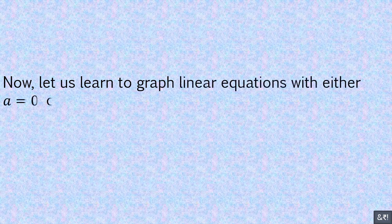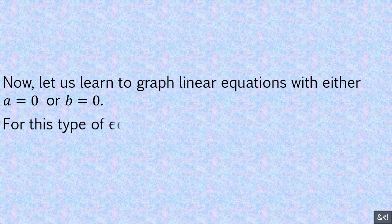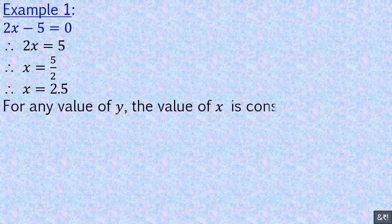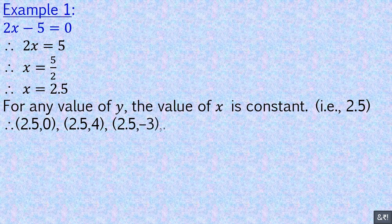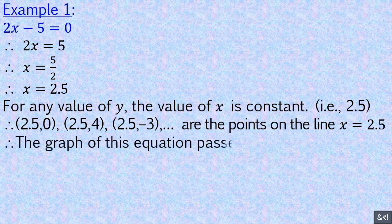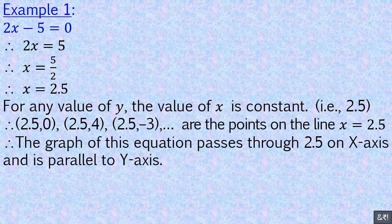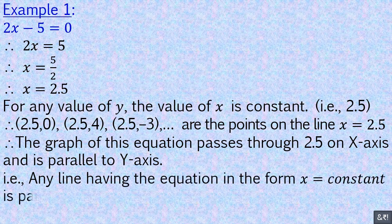Now let us learn to graph linear equations with either a equals 0 or b equals 0. For this type of equation, always simplify it to the form x equals constant or y equals constant. Example 1: 2x minus 5 equals 0, therefore 2x equals 5, therefore x equals 5/2, that is x equals 2.5. For any value of y, the value of x is constant at 2.5. So points like (2.5, 0), (2.5, 4), (2.5, negative 3), etc., lie on the line x equals 2.5. The graph passes through 2.5 on the x-axis and is parallel to the y-axis. Any line with equation in the form x equals constant is parallel to the y-axis.